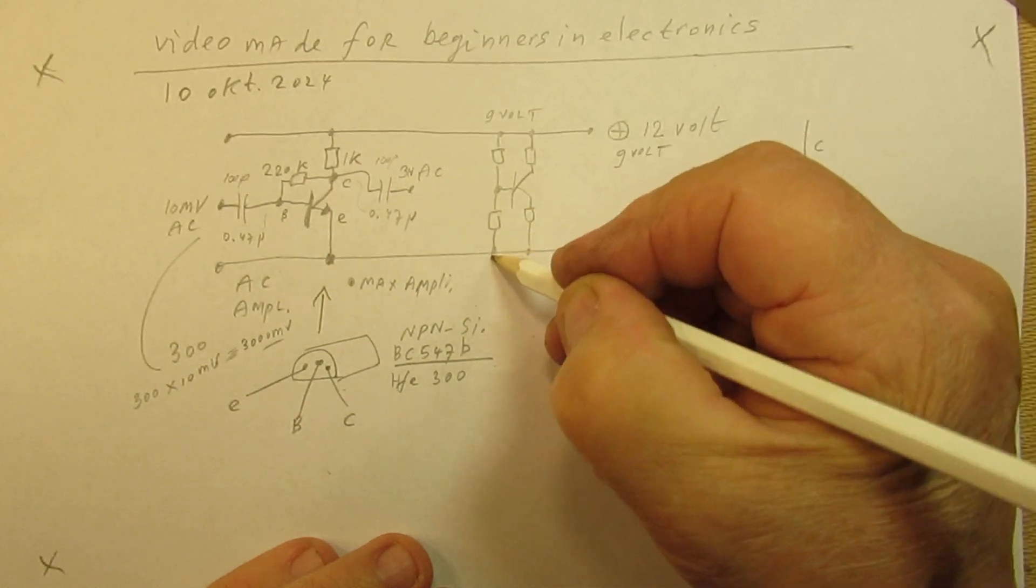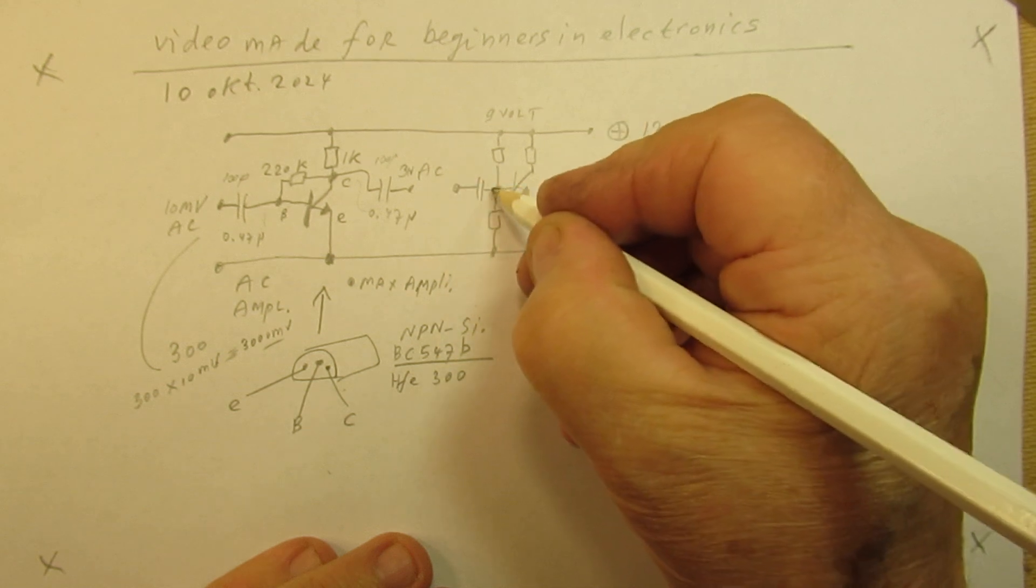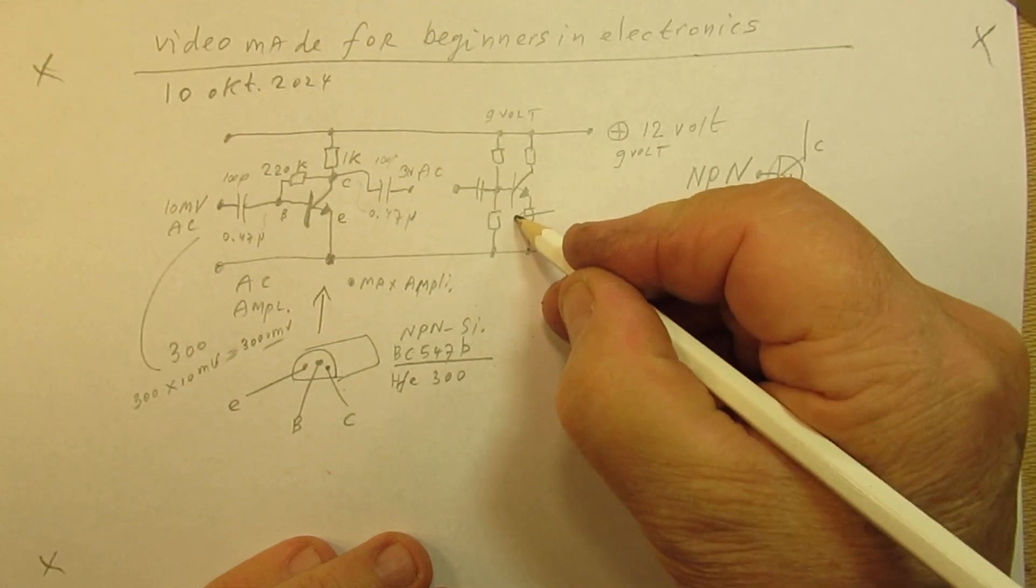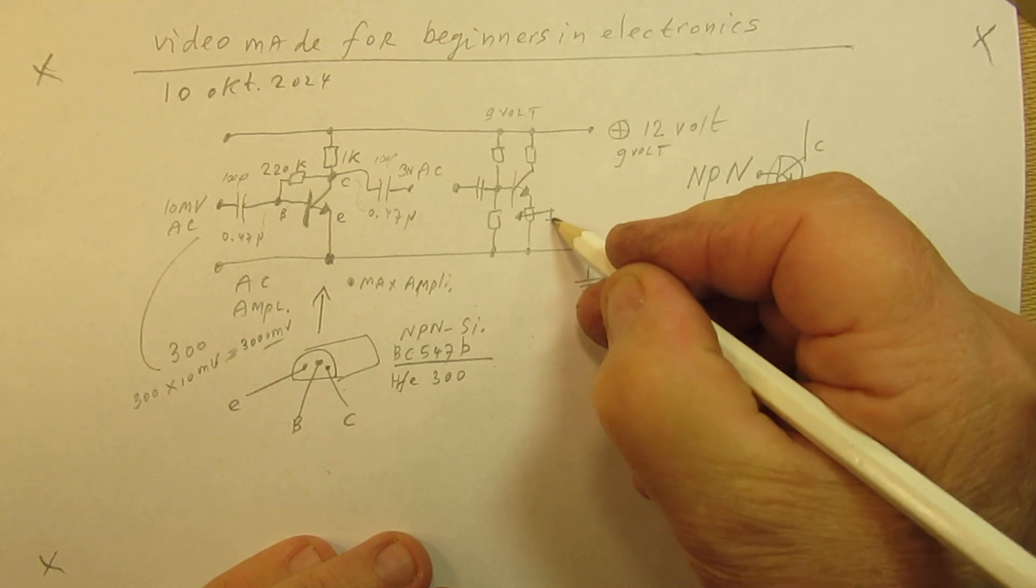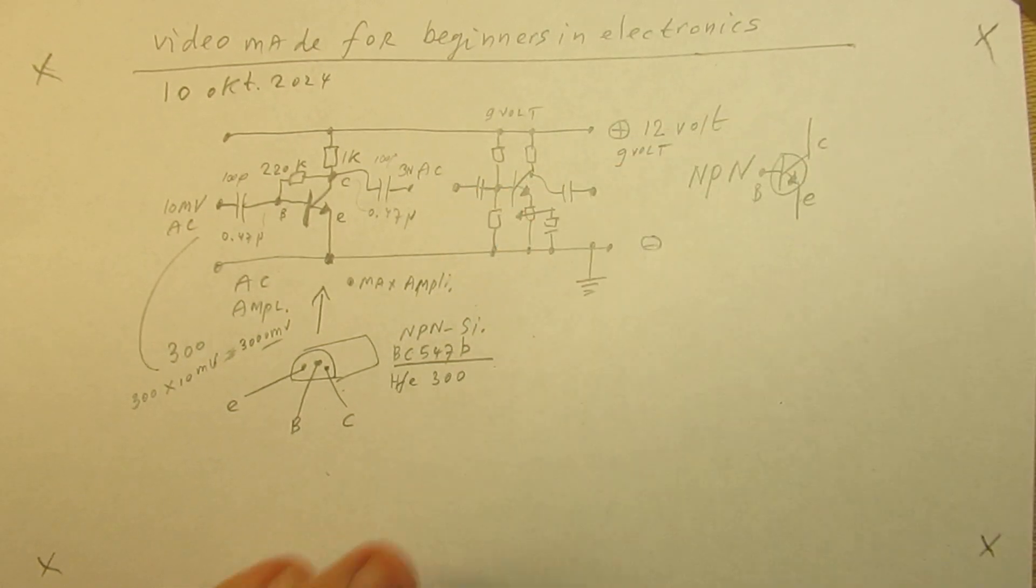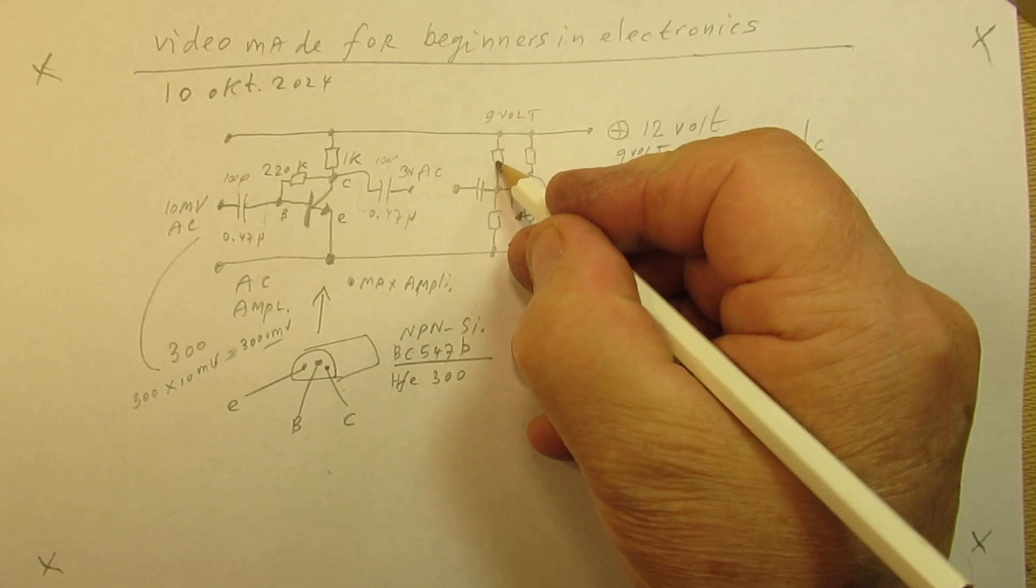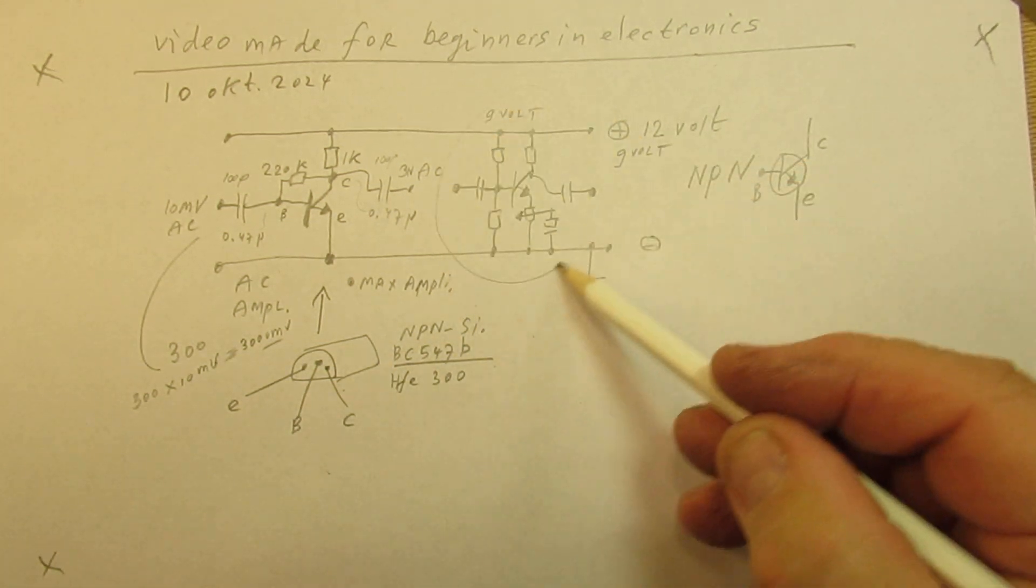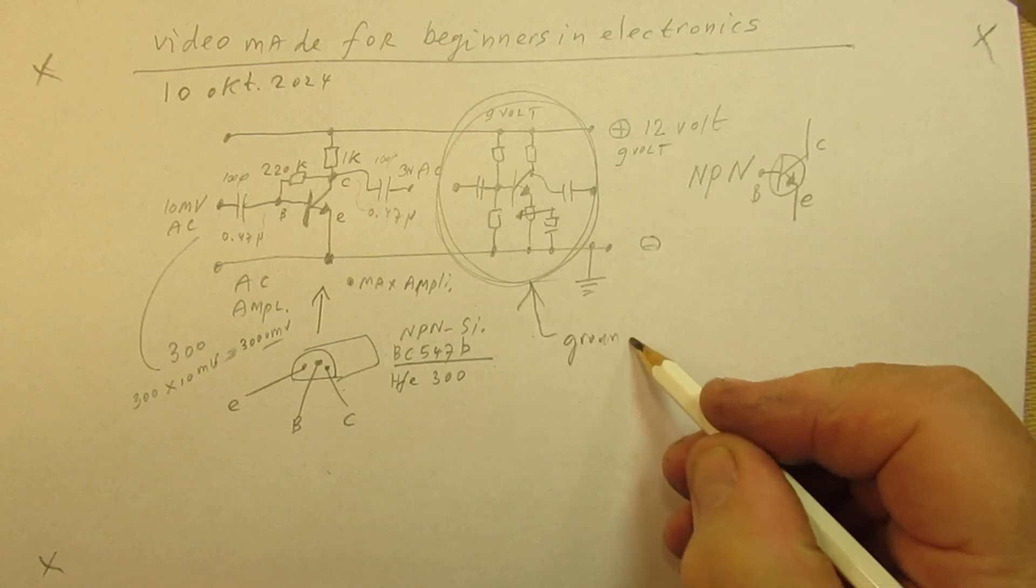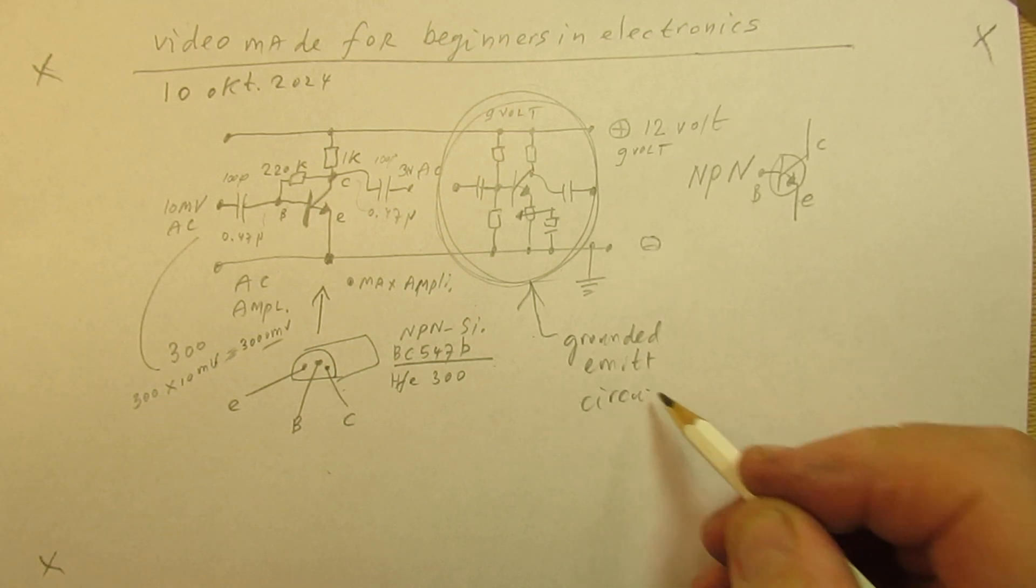I found that many people cannot find my circuits even when I tell them to go to the search function on my YouTube channel. Anyway, I'm now on 11 minutes. This is also a classical grounded emitter circuit, and there's a lot to tell about that.